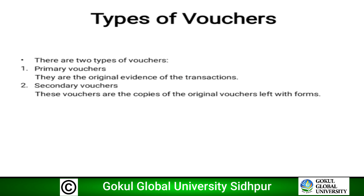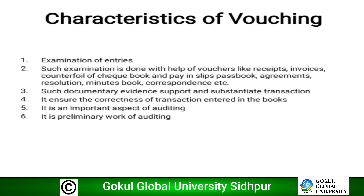There are two types of vouchers. Primary vouchers are the original evidence of the transactions — they include original evidence of transactions and entries. Secondary vouchers are copies of the original vouchers left with firms; that means secondary vouchers are copies of the original vouchers or original evidences.